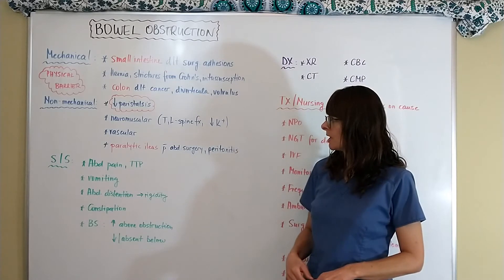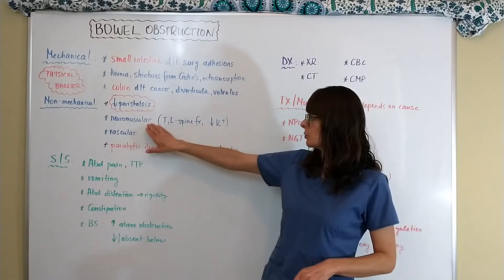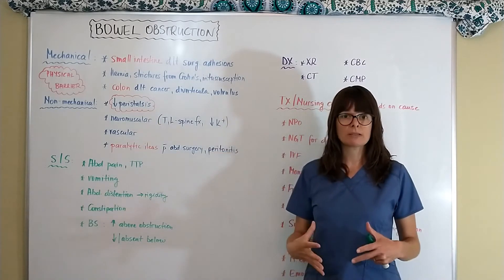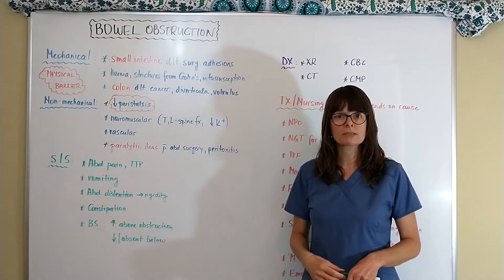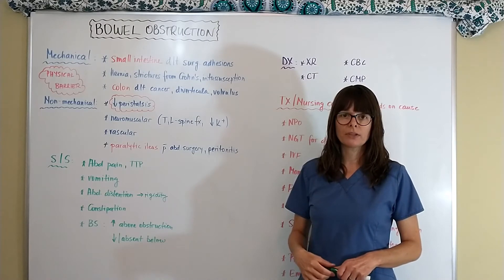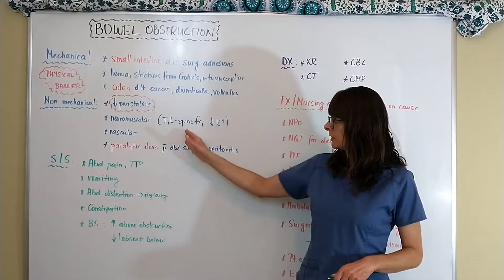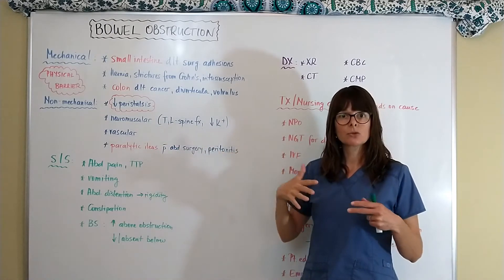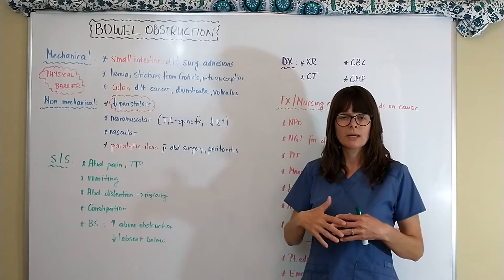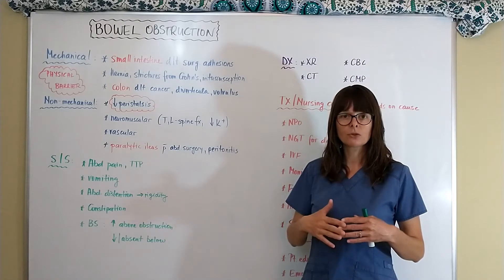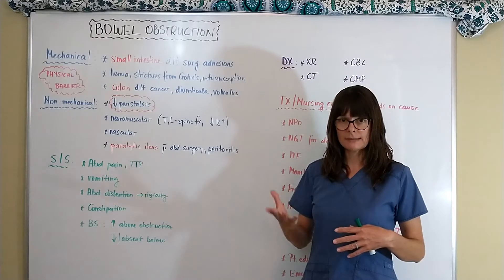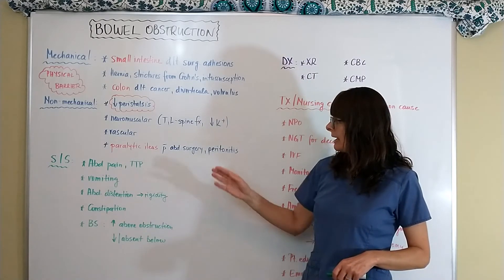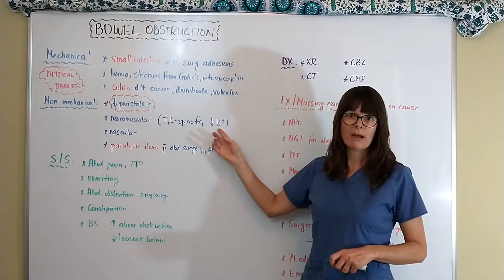Non-mechanical obstruction can also be due to neuromuscular or vascular causes. For neuromuscular causes, remember that we need neuromuscular control and innervation of the digestive tract. A fracture in the thoracic or lumbar spine can block the impulses of the neuromuscular system on the intestine, causing a non-mechanical obstruction.